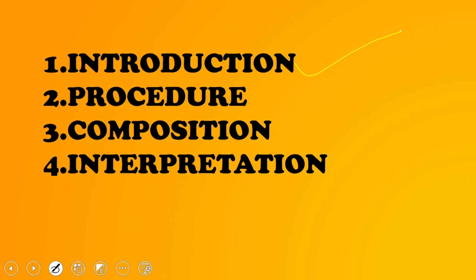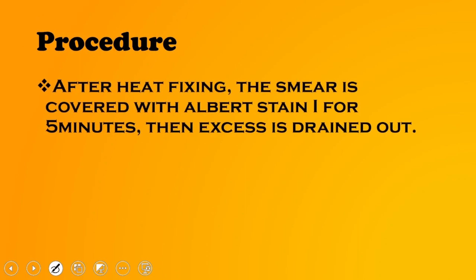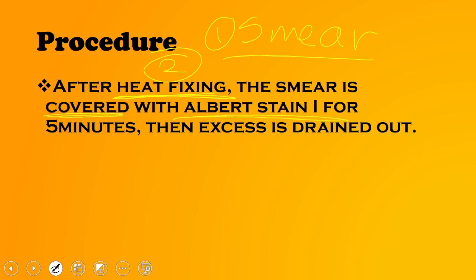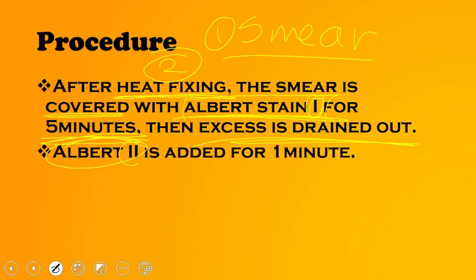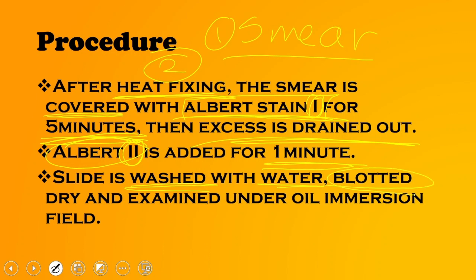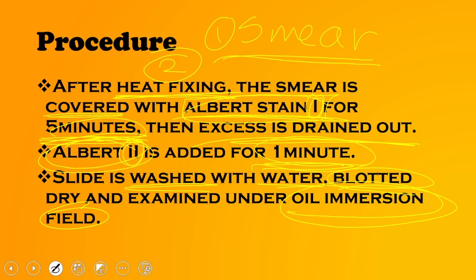Albert stain procedure: first, prepare the smear; second, heat-fix the slide; third, cover the slide with Albert stain one and apply it for nearly five minutes, then drain the excess. Then add Albert stain two and wait for nearly one minute. Finally, wash the slide with water, blot it dry, and examine under the oil immersion field.